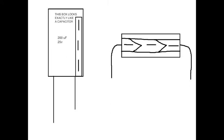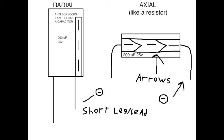On a radial-leaded capacitor, like the one on the left, there will be a band on the side that has the negative pin, or lead, or leg, or whatever you want to call it. Also, you'll also notice that on an axial-leaded capacitor, which is in the shape of a resistor, the band will have arrows sort of drawn into it. The arrows point at the negative lead.